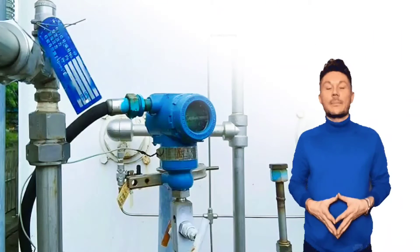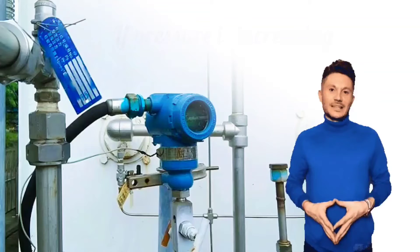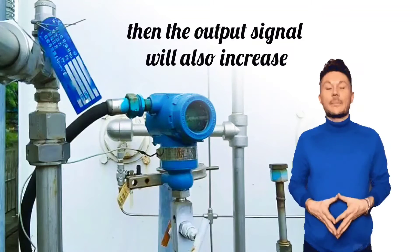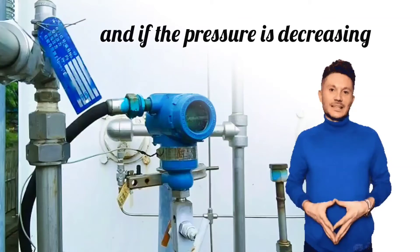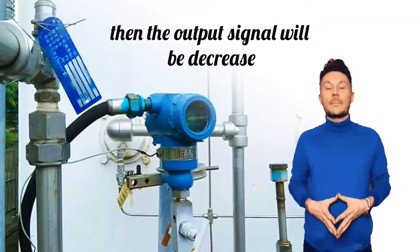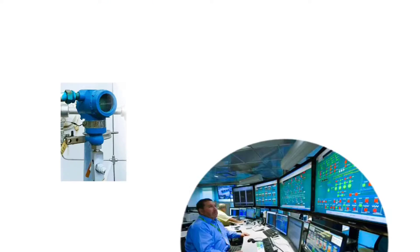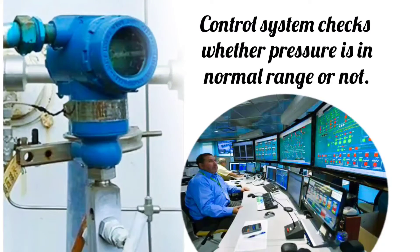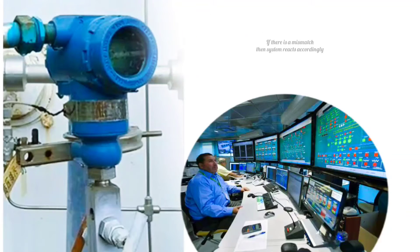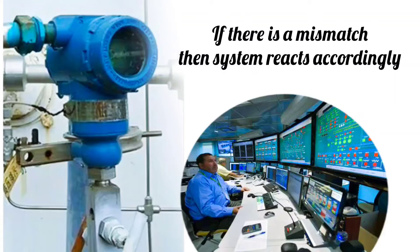If the pressure is increasing, then the output signal will also increase. And if the pressure is decreasing, then the output signal will decrease. Control system checks whether the pressure is in normal range or not. If there is a mismatch, then system reacts accordingly.